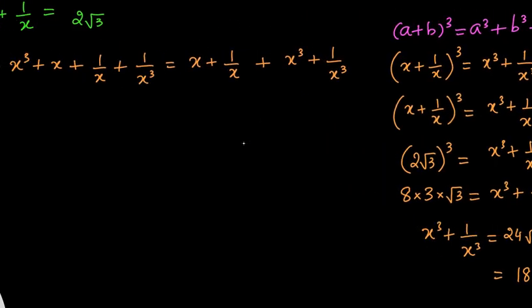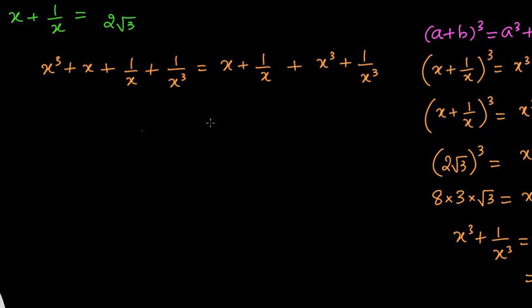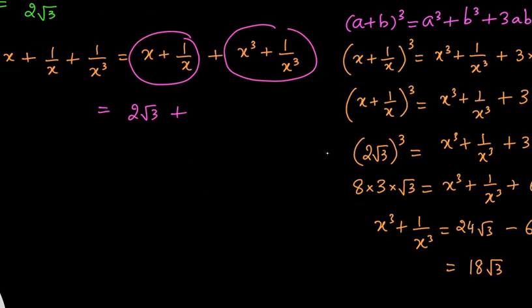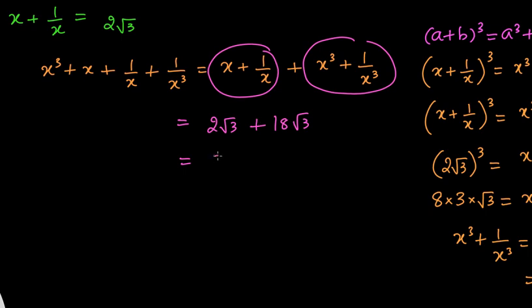Finally, we can find the value of the full expression. We have x plus 1 by x, which is 2 root 3, plus x cubed plus 1 by x cubed, which is 18 root 3. So the final answer is 2 root 3 plus 18 root 3, which equals 20 root 3. This is the final answer and the elegant solution. I hope all of you enjoyed the solution — for more such interesting videos, kindly subscribe to my channel. I will see you all in the next video.